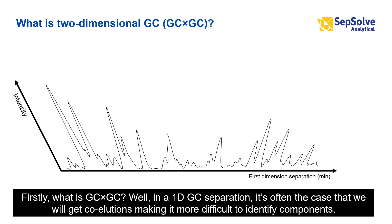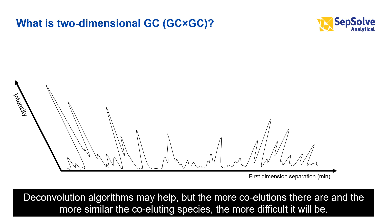What is GC×GC? Well, in a 1D-GC separation, it's often the case that we will get co-elutions, making it more difficult to identify components. Deconvolution algorithms may help, but the more co-elutions there are, and the more similar the co-eluting species, the more difficult it will be.